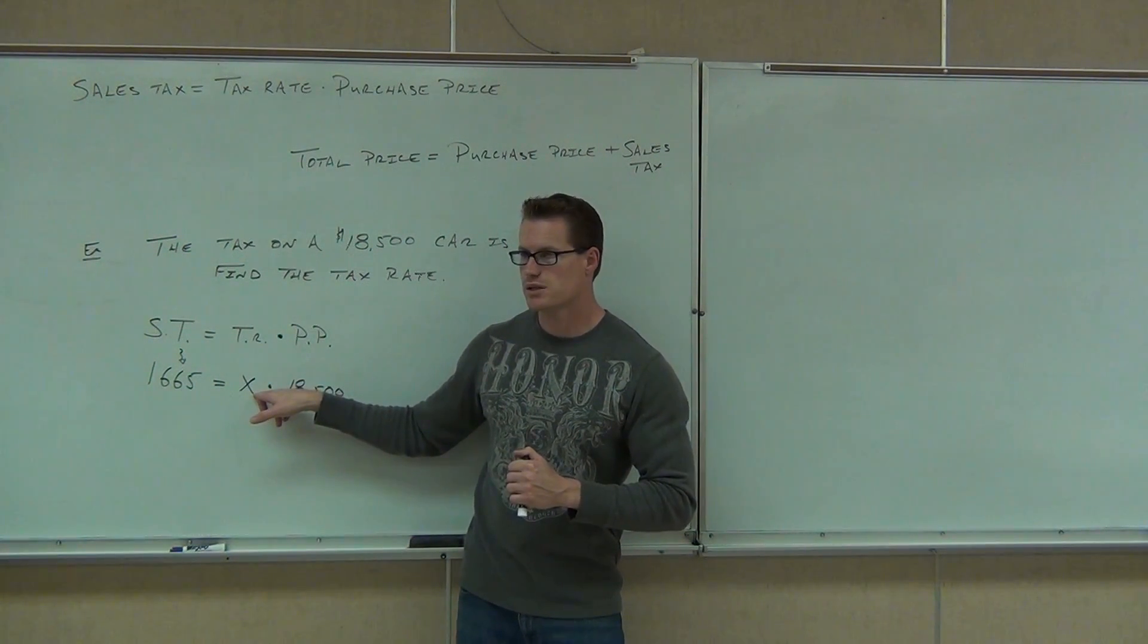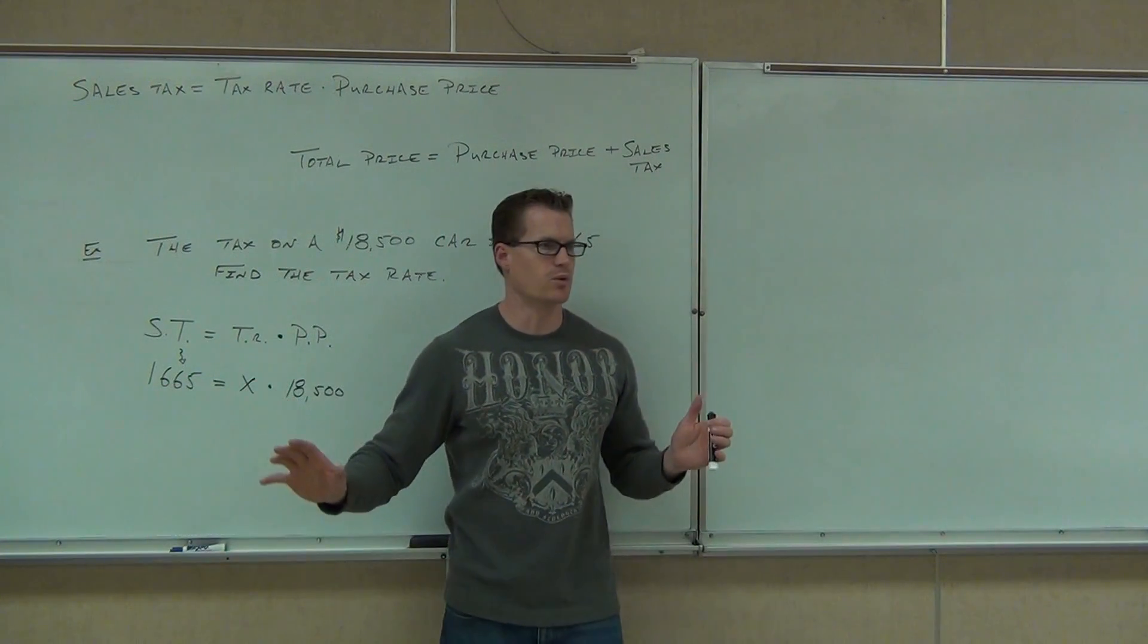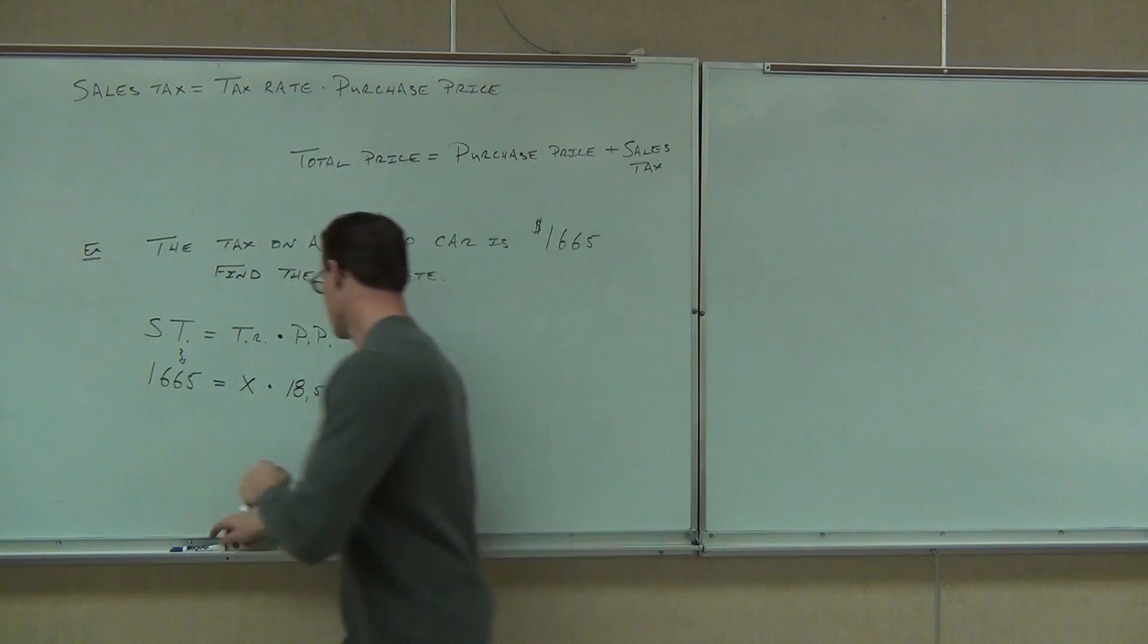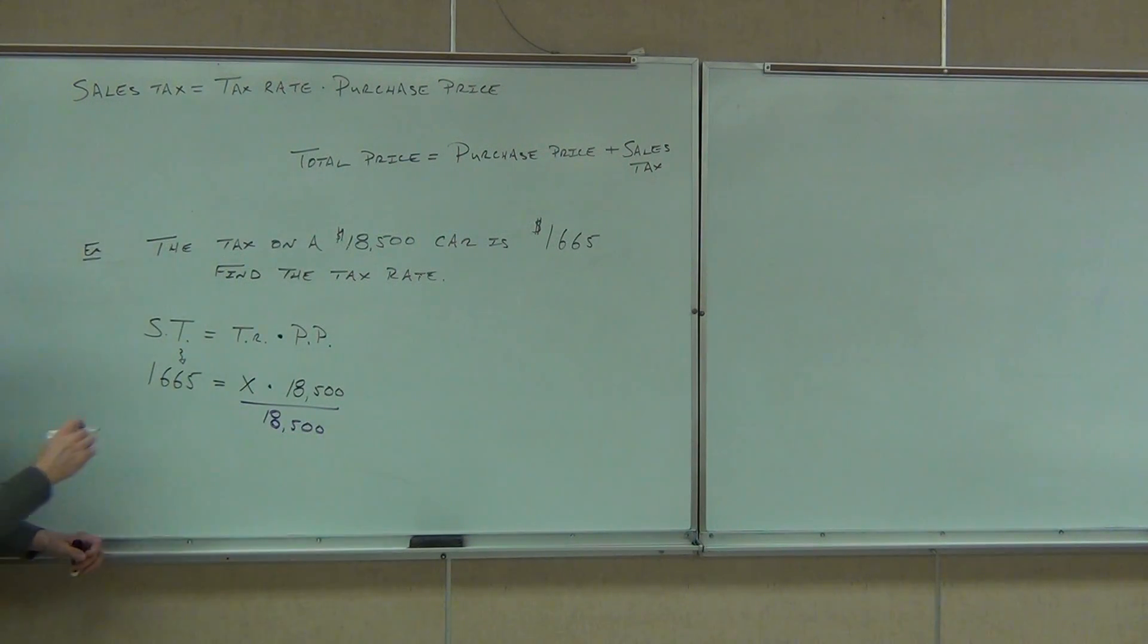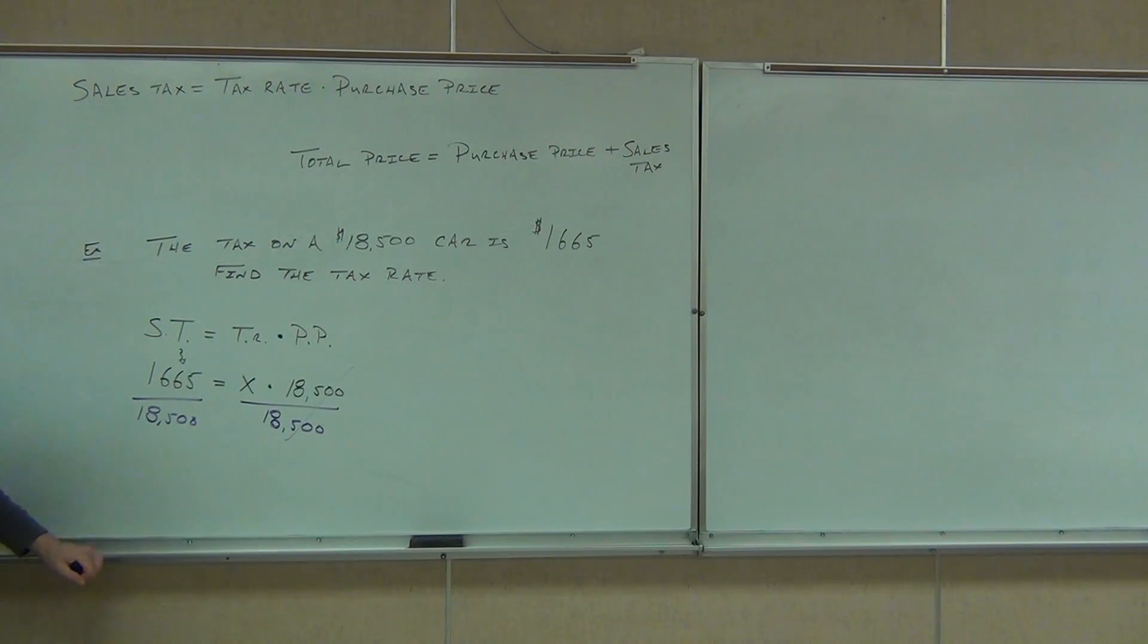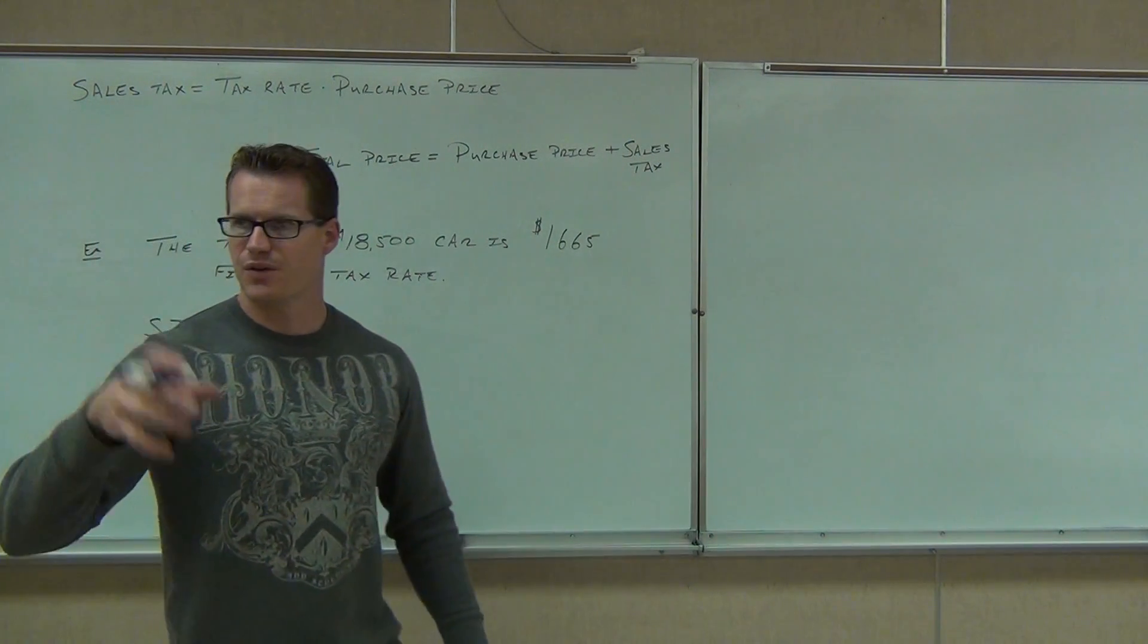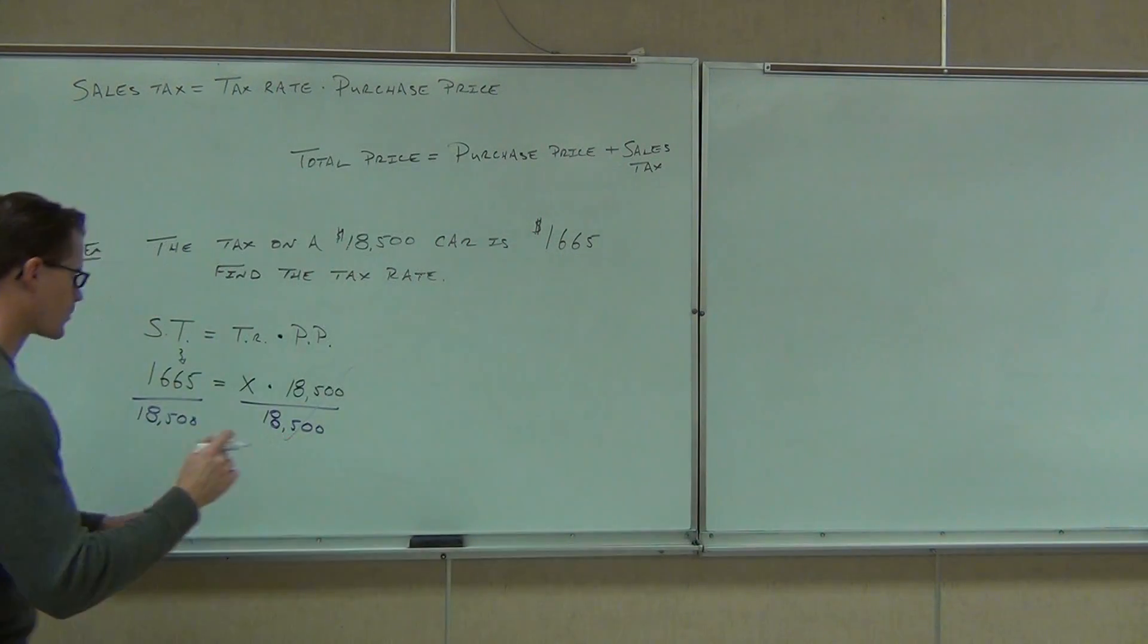We're trying to solve for X. So if we divide over here, we're still going to have X multiplied by some crazy number. We don't want that. What we do want to do is get rid of the $18,500. If we divide both sides by $18,500, notice how the $18,500 divided by $18,500, that's going to go away. That's going to be out of our equation.